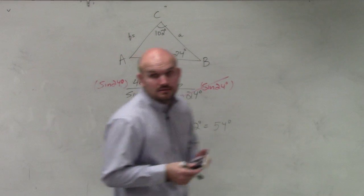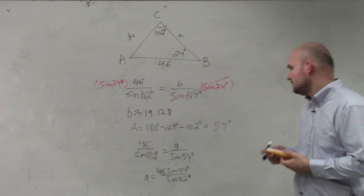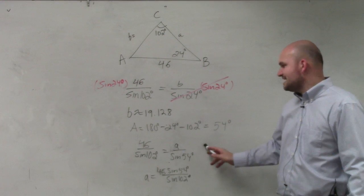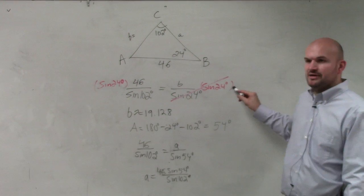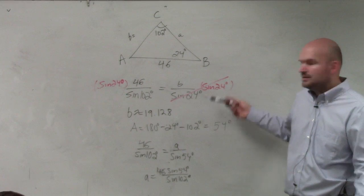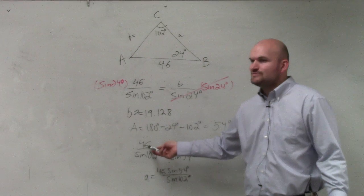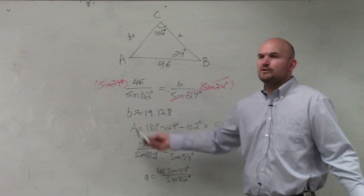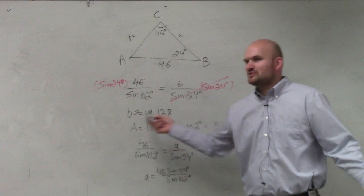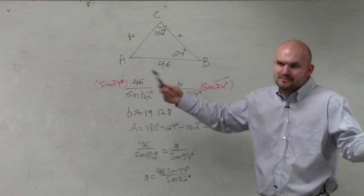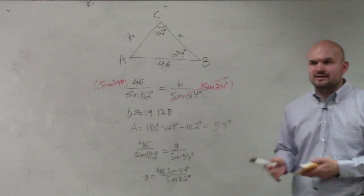So basically, what I did is I multiplied by sine of 54 on both sides, like I did up here. I'm just not showing my work again. So I multiplied by sine of 54 on both sides. So really, it's sine of 54 times 46. But can we just write 46 times sine of 54 instead? Like, same thing. It's 3 times 2, the same as 2 times 3? Yes. So that's why I just rewrote it like that.